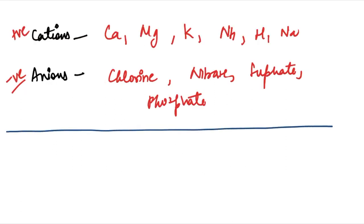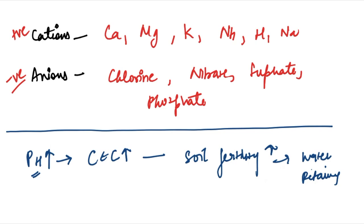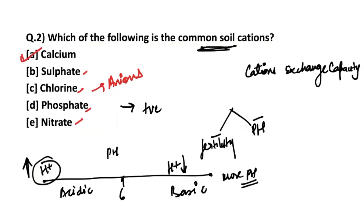How do cations affect soil fertility? Increasing the pH level means reducing the number of hydrogen ions present, moving the soil towards being basic. Increasing pH level actually increases the cation exchange capacity of the soil. Better cation exchange capacity means better soil fertility, and better fertility means better water retaining capacity. This is why the chemical component of soil is very important.